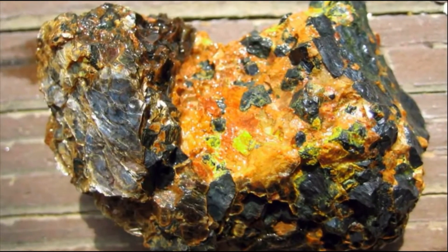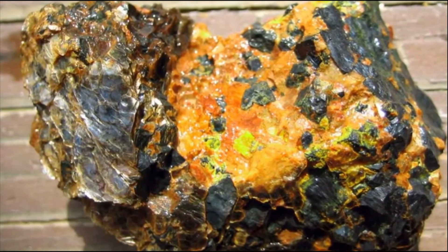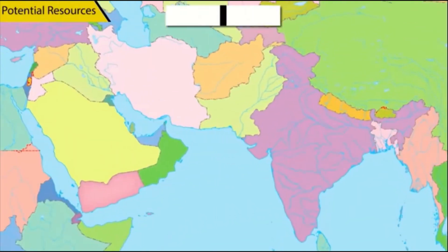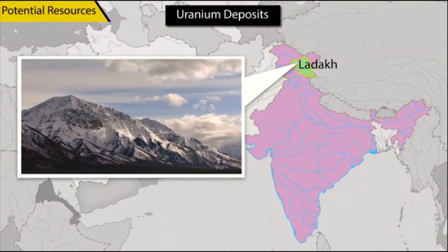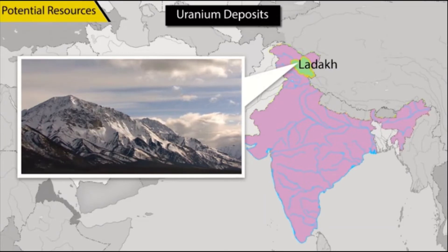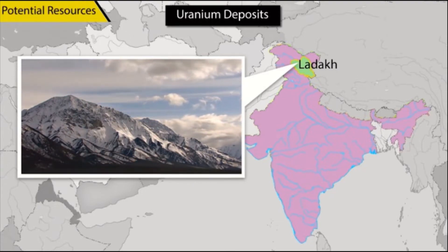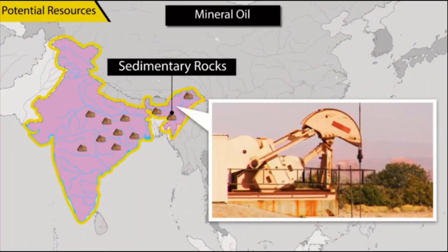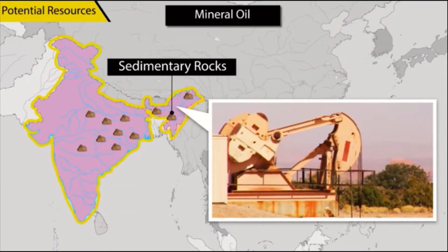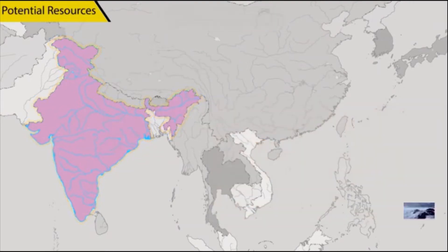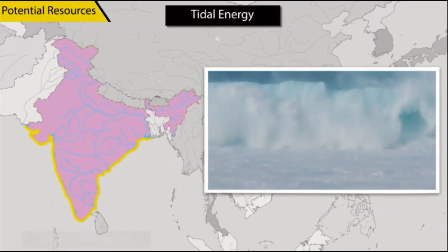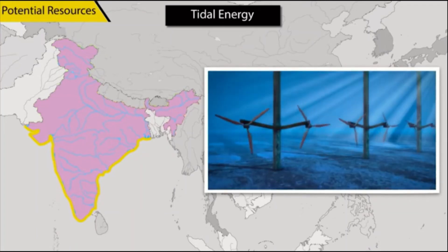On the other hand, there exist resources in nature that are not being used at present. These resources can be grouped as potential resources. For example, uranium deposits have been discovered in the hills of Ladakh; however, their actual quantity and quality have yet to be established, making it currently a potential resource. Another example is mineral oil in parts of India with sedimentary rocks — till the oil is not drilled out and used, it remains a potential resource. Similarly, there is great potential for developing tidal energy along the coasts of India; however, till it is actually utilized, tidal energy remains a potential resource.